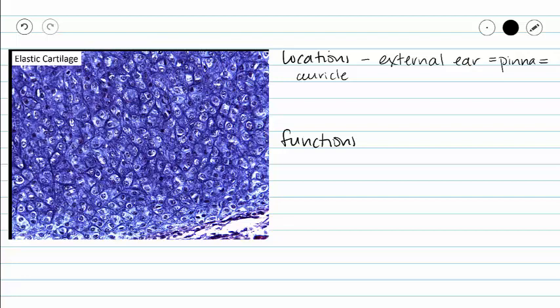The next place we see elastic cartilage is in our epiglottis. Our epiglottis is a little flap of elastic cartilage that is going to cover your glottis when you swallow. Your glottis is the opening to your respiratory tract — the very top of our trachea. Our epiglottis bends to cover that opening whenever we swallow so that liquid, food, and whatever else don't go down into our lungs.